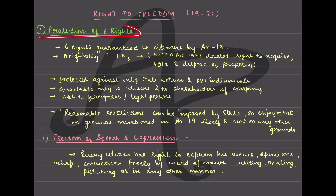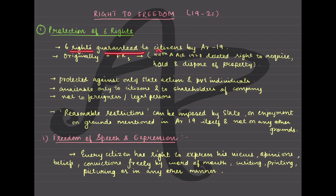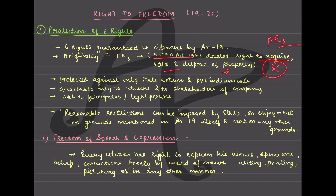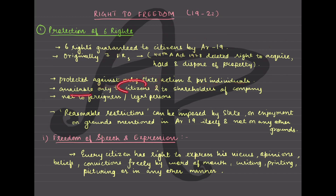Article 19 is about protection of six rights - six rights guaranteed to citizens, not to all people but citizens. Originally there were seven rights but the 44th Amendment Act removed the right to acquire, hold and dispose of property. Article 19 gives protection against state action only, not private individuals. It is available only to citizens and shareholders of a company, not to foreigners or legal persons.